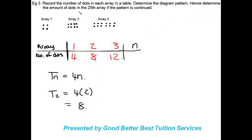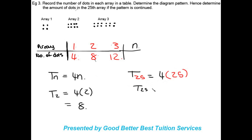The next part asks: determine the amount of dots in the 25th array. Our arrays are our n values, so 25 is our new n. We want to find term 25: t25 = 4 × 25 = 100. So there will be 100 dots in the 25th array.